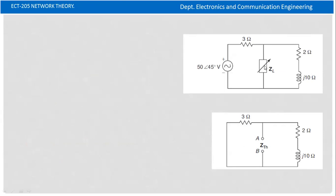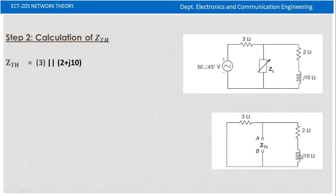Now find Zth. The voltage source is shorted. Looking into terminals A-B, the parallel combination gives Zth equal to 2.64 plus j0.72.